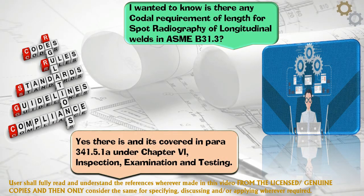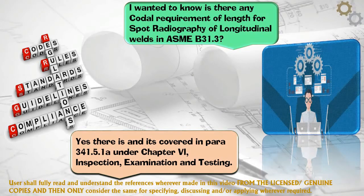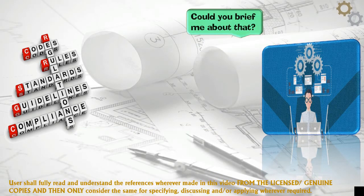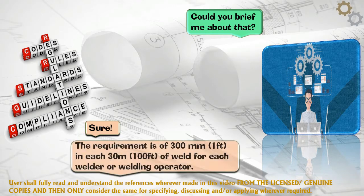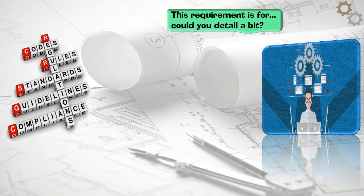Yes, there is, and it's covered in PARA 341.5.1 under Chapter 6, Inspection, Examination and Testing. Could you brief me about that? Sure. The requirement is 300 millimeters (1 foot) in each 30 m (100 feet) of weld for each welder or welding operator. Could you detail a bit more?